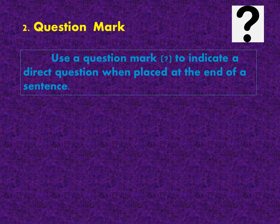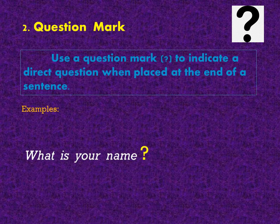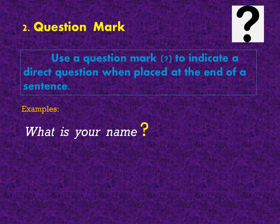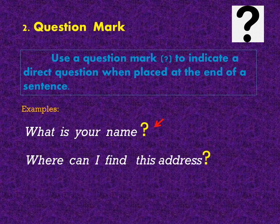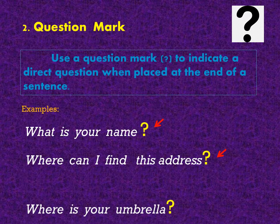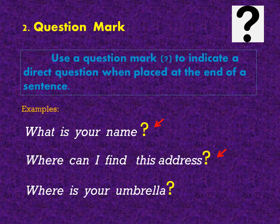The second type is question mark. Use a question mark to indicate a direct question when placed at the end of a sentence. Examples: What is your name? Where can I find this address? Where is your umbrella?